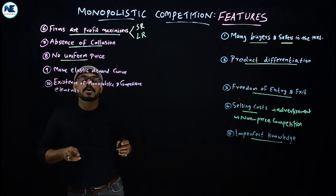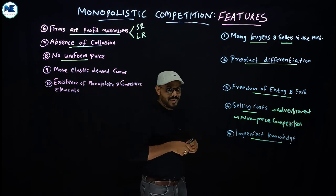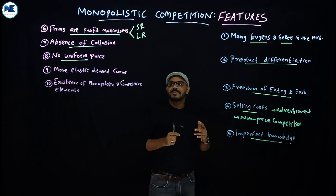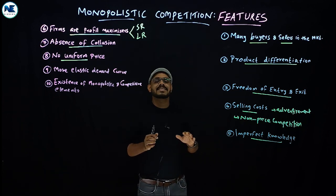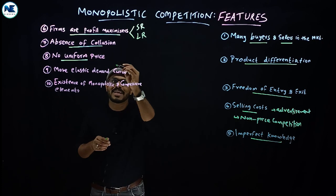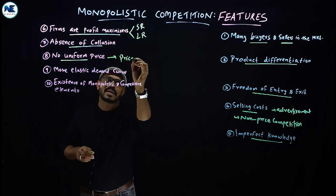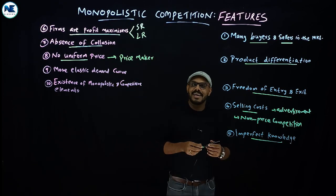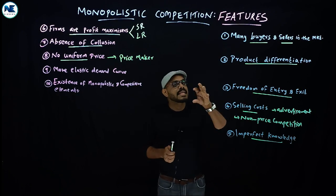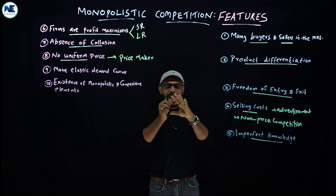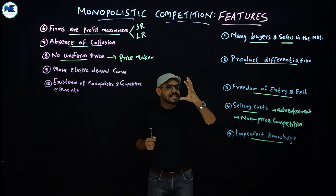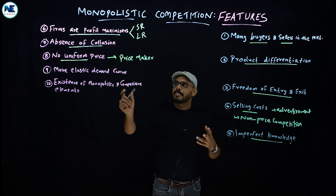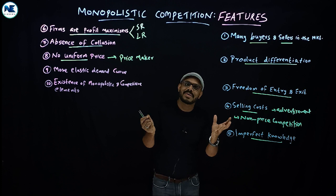The ninth point is no uniform price. Unlike perfect competition where there is a homogeneous price, in monopolistic competition there is no uniform price. Each firm is a price maker — not a 100% price maker like a monopolist, nor a pure price taker — but each firm has some influence over its own price. Due to product differentiation in branding, design, and quality, different firms charge different prices.